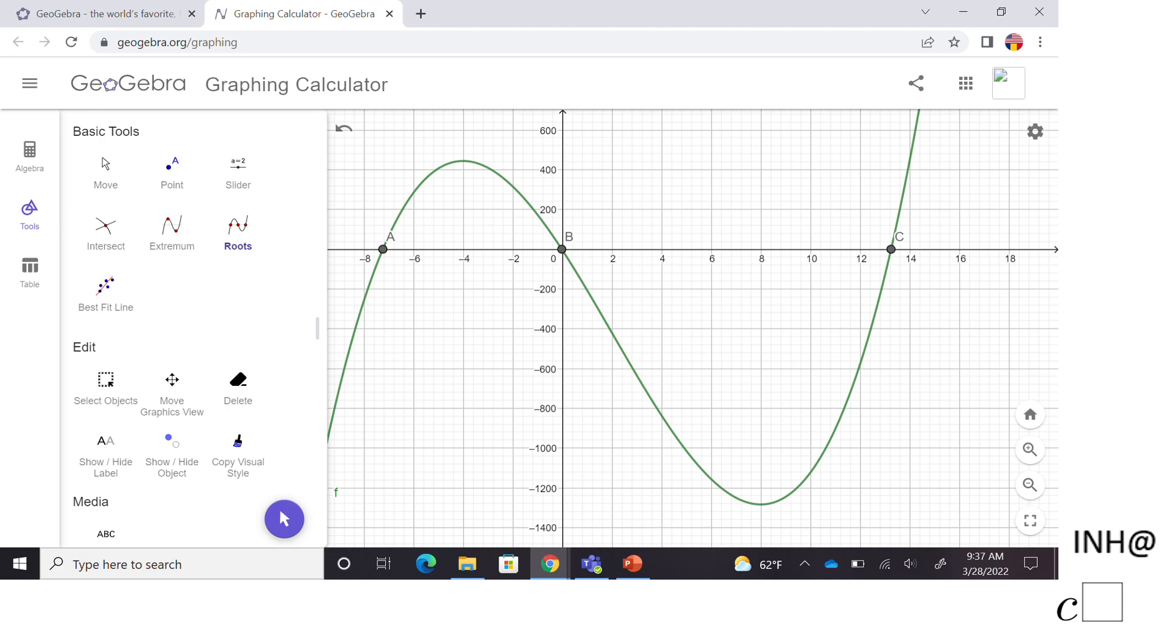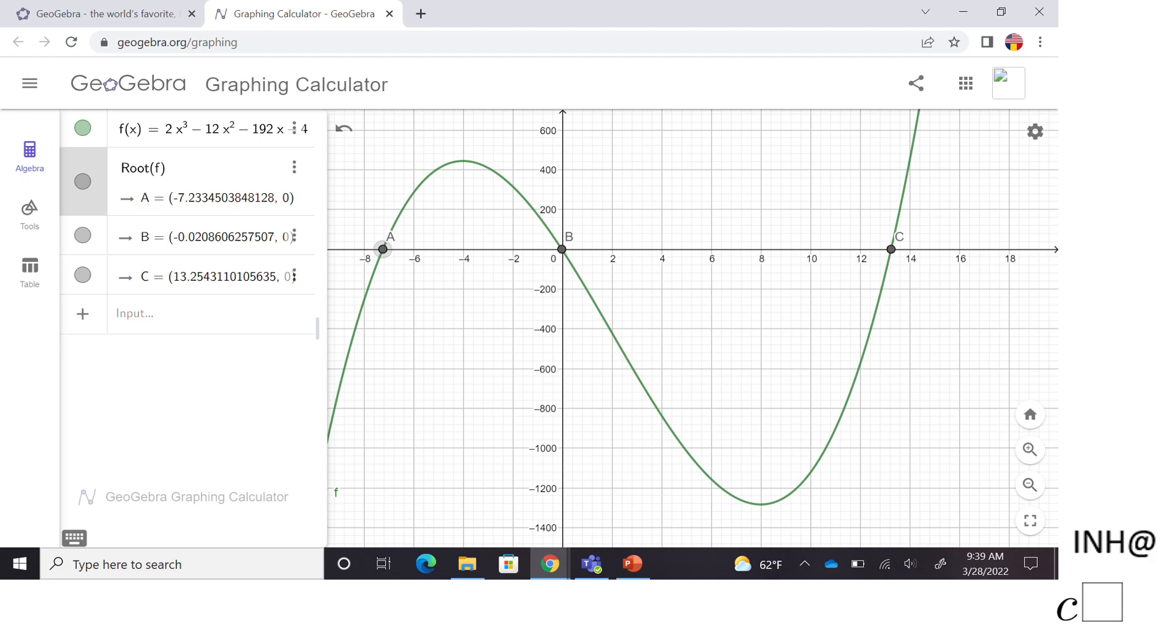If you want to see the values of these points, the x and y coordinates, obviously the y coordinate is zero, you want to click on this Algebra and you'll see the first x-intercept is at negative 7.233, the second x-intercept B is at negative 0.02, and the last one C at 13.254.